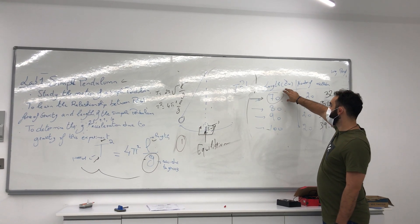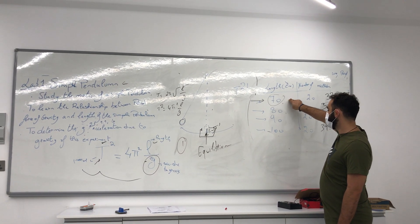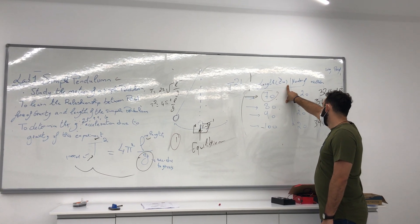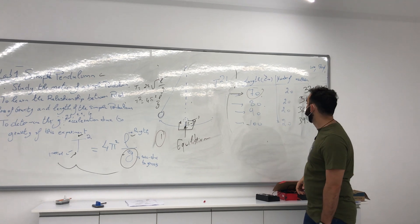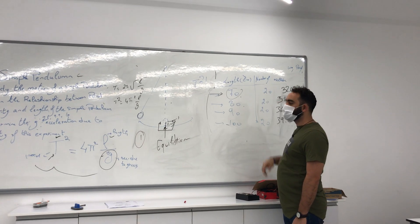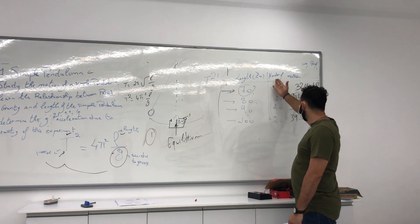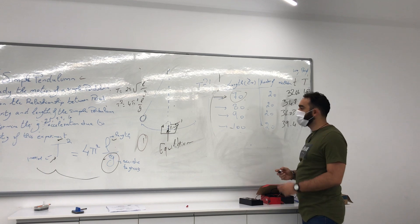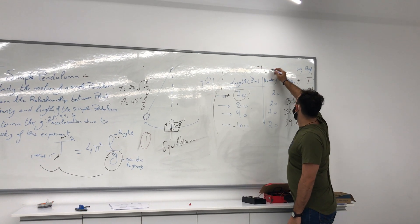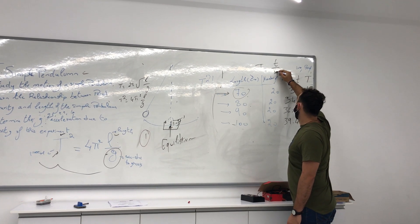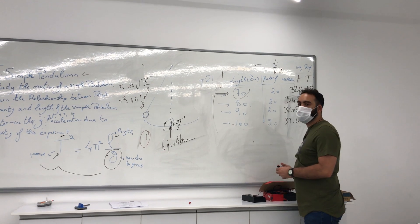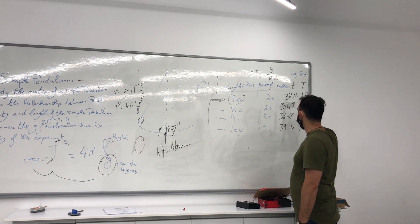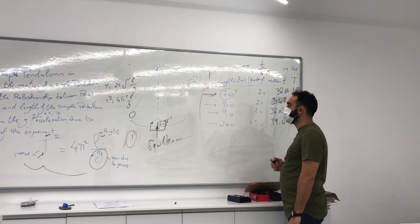We will vary the length, starting at 70, 80, 90, and 100 centimeters. Be careful with centimeters. We will use a specific number of oscillations to find the period. The period T is the total time divided by the number of oscillations — that is how we find T. The equipment will do this for us.